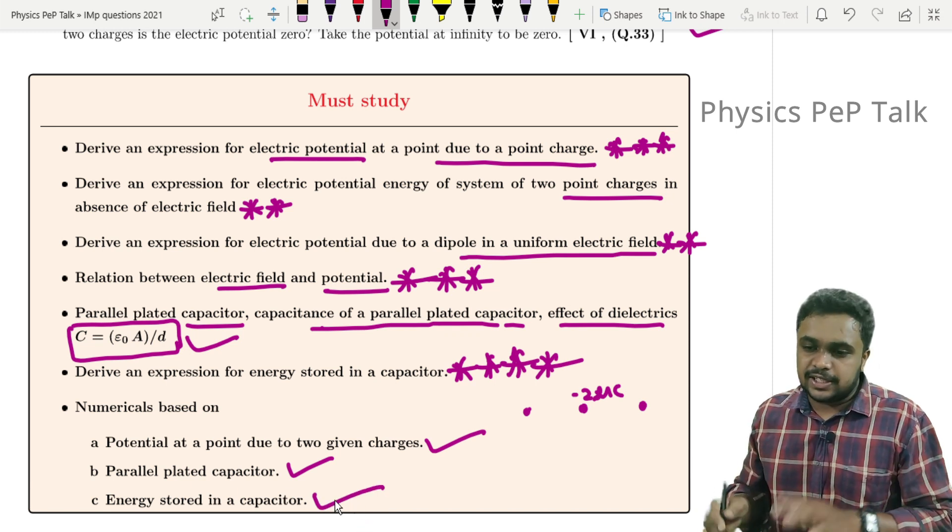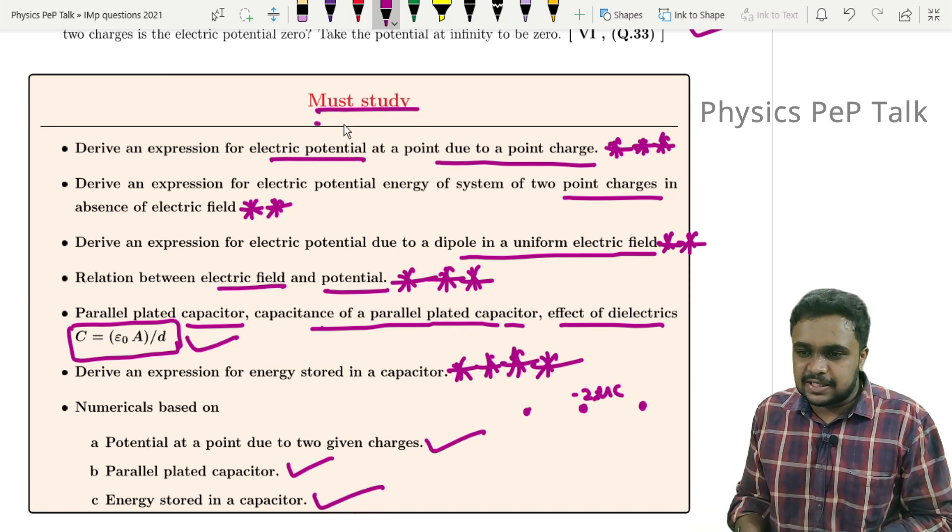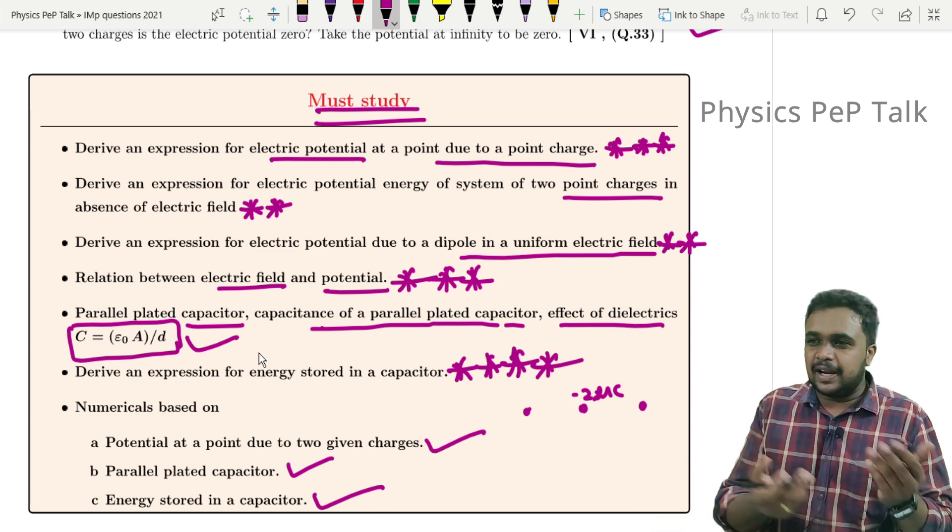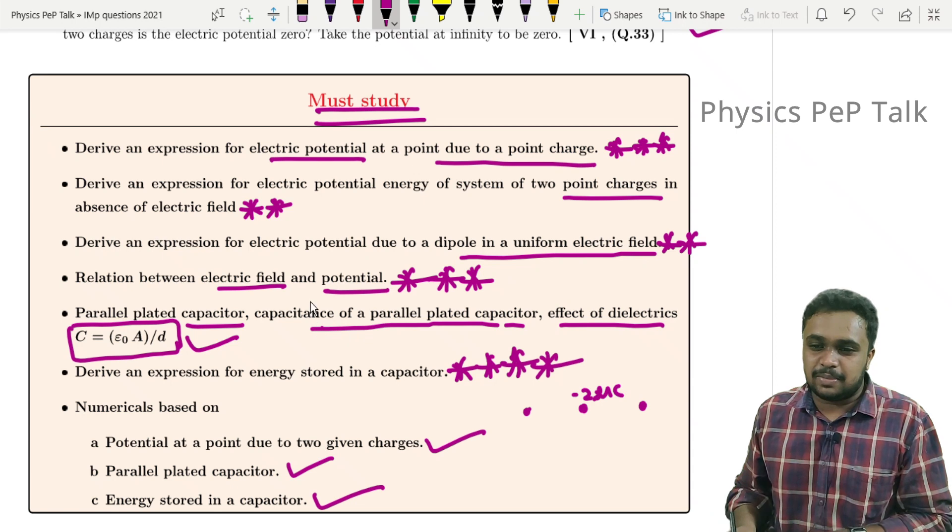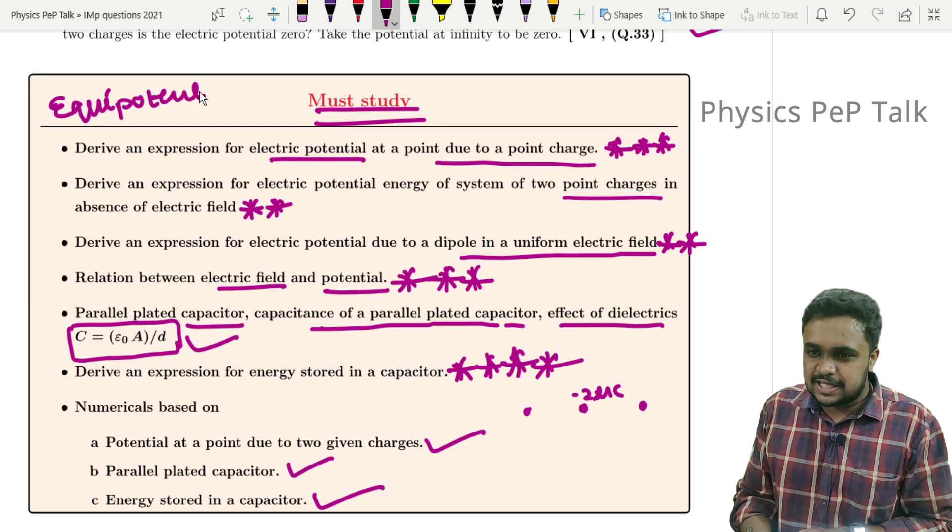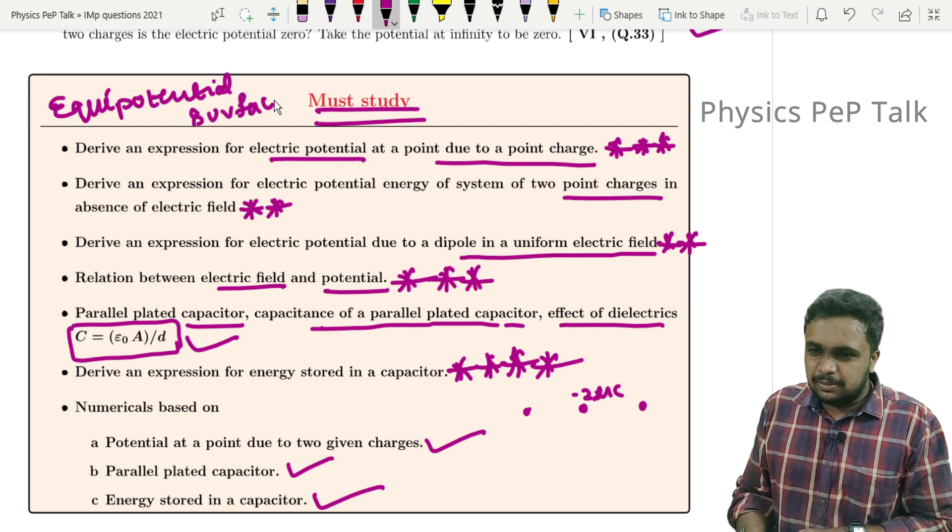Parallel plate capacitor is very important - many problems are there. Next, energy stored in a capacitor. So in this order, the must-read topics in this chapter are almost covered here. There are a few definitions - equipotential surface is one important definition, usually asked for one mark in this chapter.